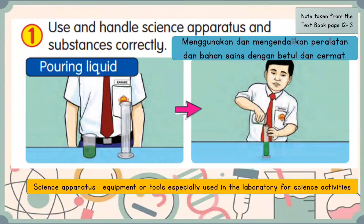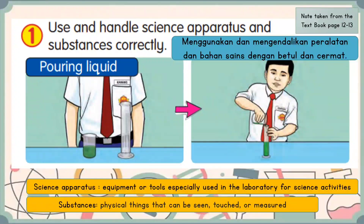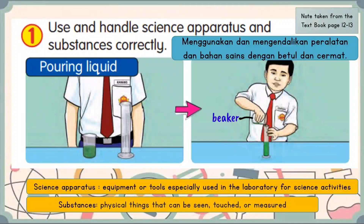The first manipulative skill is to use and handle science apparatus and substances correctly. Menggunakan dan mengendalikan peralatan dan bahan sains dengan betul dan cermat. Science apparatus is equipment or tools especially used in the laboratory for science activities, while substances means physical things that can be seen, touched, or measured. Look at the picture — the boy is pouring liquid from a beaker into a cylinder.